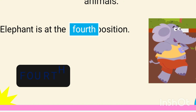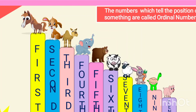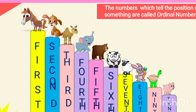What have you seen in this video? Each and every animal has taken a position. Those numbers which tell the position of these animals are called ordinal numbers. Horse is at first position, dog is at second position, camel is at third position, elephant is at fourth position, bear is at fifth position, and cow is at sixth position.